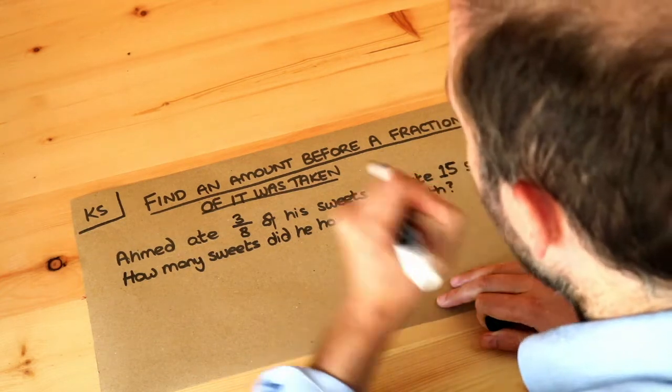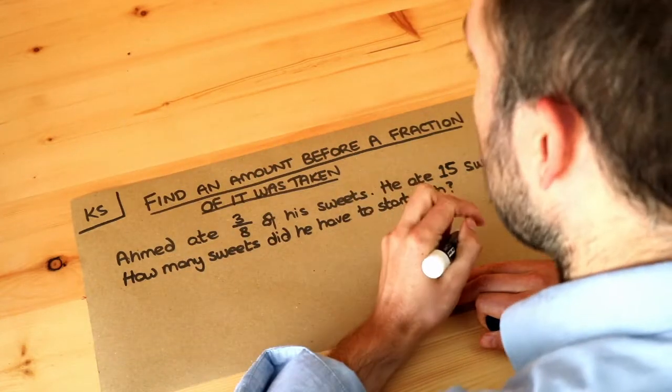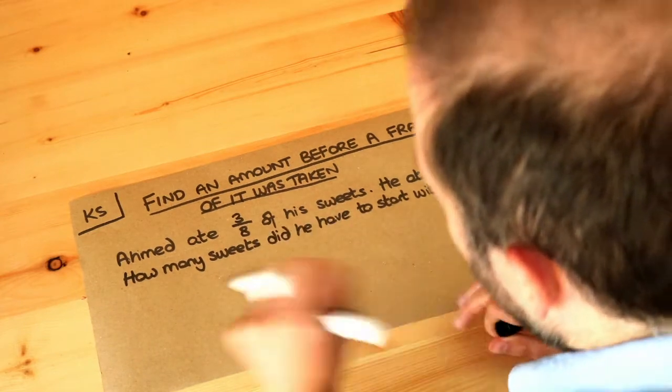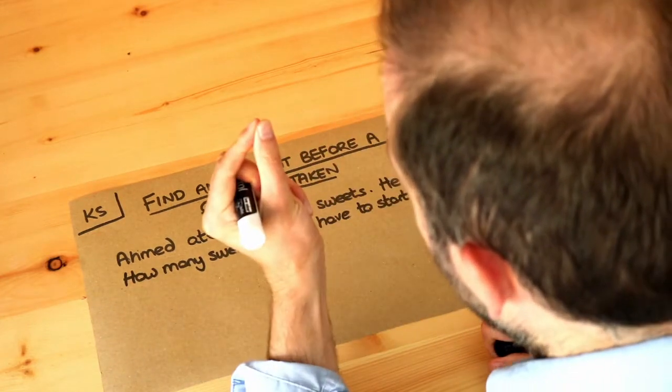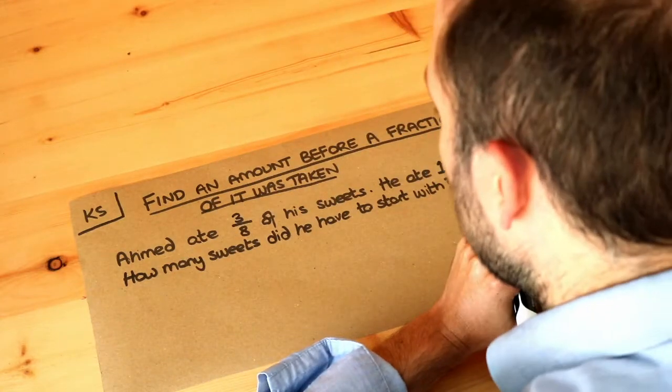Now in a previous video we've seen how we can find a fraction of an amount. So for example, how would we find three quarters of twenty? But in these kinds of problems the situation is reversed. We have the fraction of the amount and we want to find the original amount before we took the fraction of it.